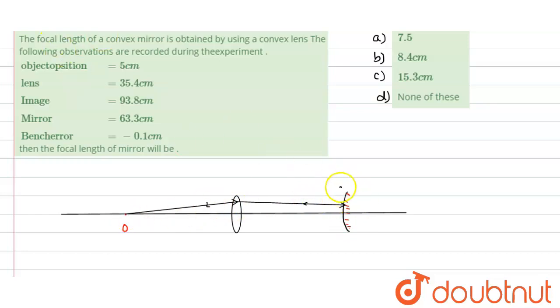If there is no mirror, this ray of light would come and form the image on the principal axis itself. This is the location of the image if there is no mirror. If this light is retracing the path in the presence of the mirror and the convex lens, it should be hitting normally. This distance should be equals to the radius of curvature.